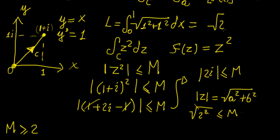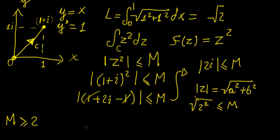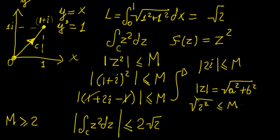Now that we have the arc length L = √2 and the upper bound M = 2, we can establish the ML inequality. The absolute value of the integral of z² dz along C is going to be less than or equal to M × L = 2 × √2 = 2√2. This is the maximum value this integral can attain for any point along that curve.